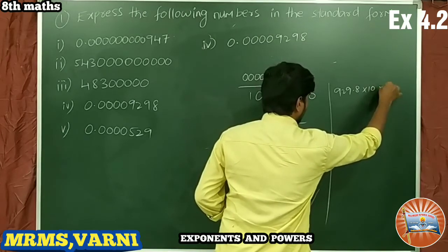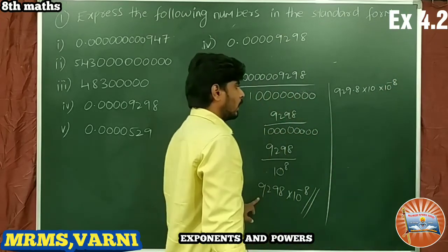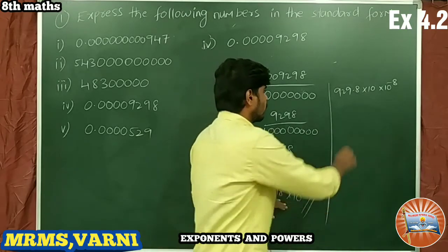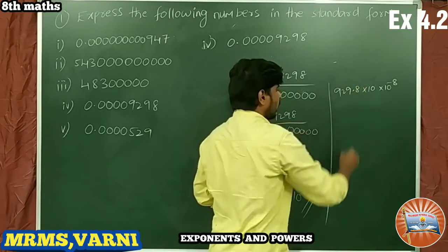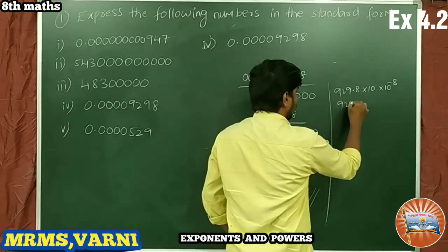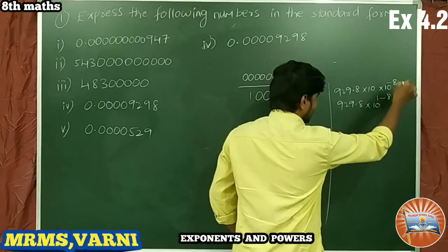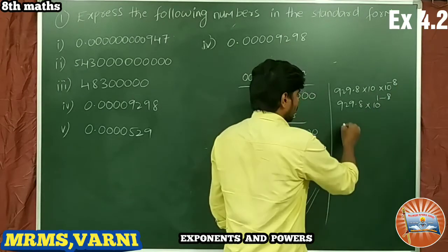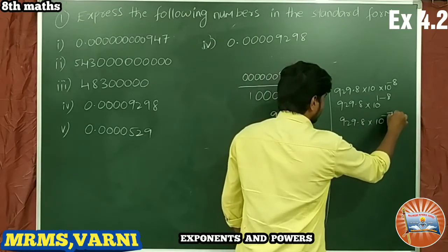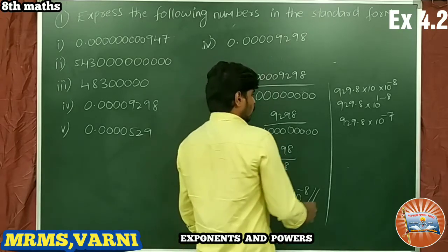We can also write 929.8 × 10 × 10^(−8). Multiplying gives 929.8, so we have 929.8 × 10^(1−8) = 929.8 × 10^(−7).